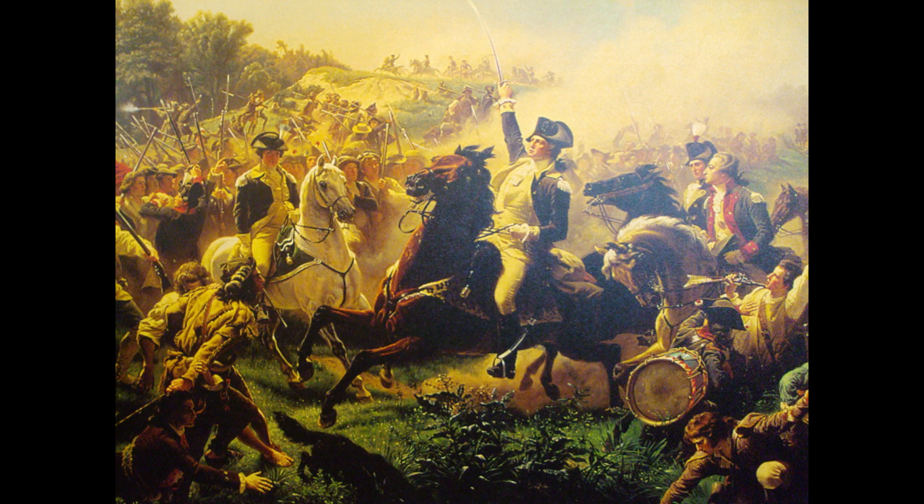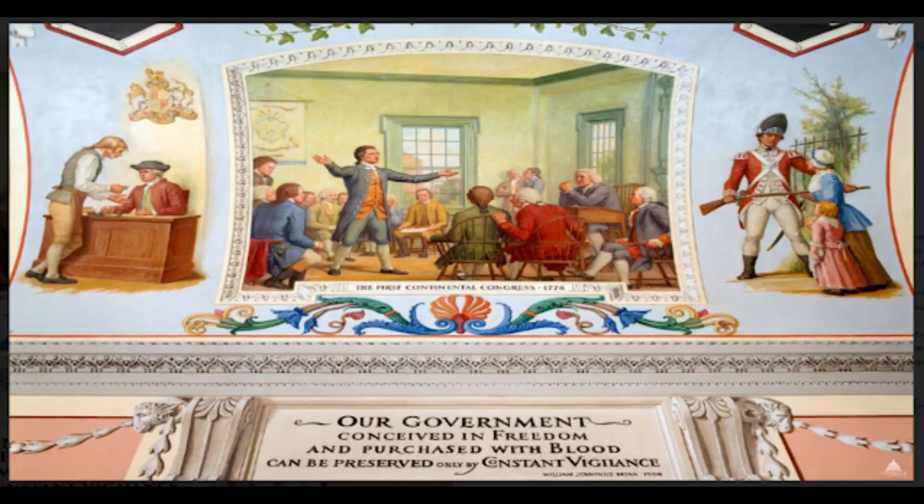In response, colonial leaders, including George Washington and John Adams, gathered at the First Continental Congress in September 1774 to coordinate resistance against British rule. The war's outbreak in April 1775 marked a turning point, with the Second Continental Congress forming the Continental Army under General George Washington in June 1775.